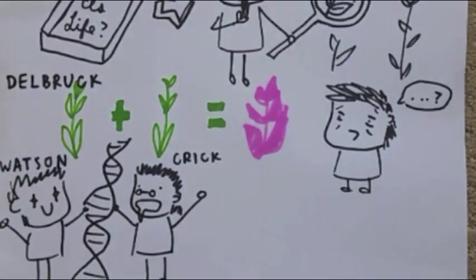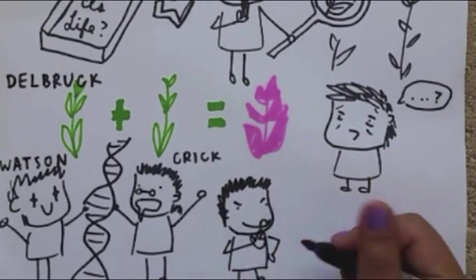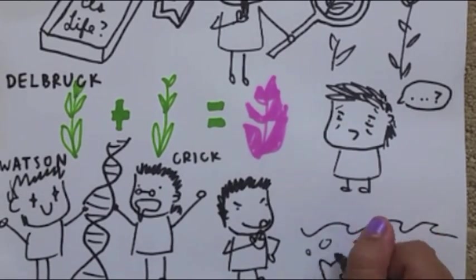Adolph Eugene Fick used biophysics to create Fick's Law of Diffusion, which governs the diffusion of gas across a fluid membrane, as well as to be the first to measure cardiac membranes.